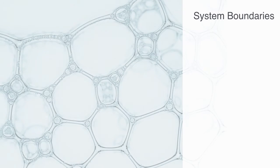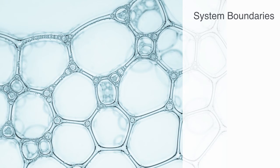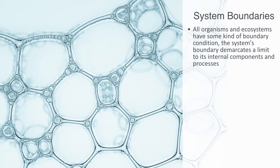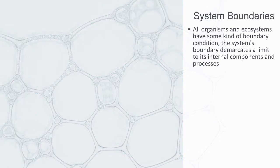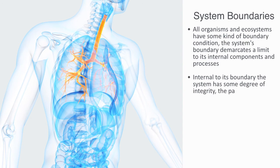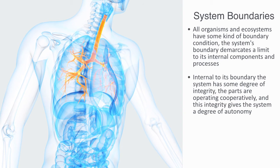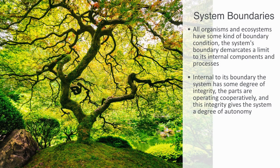These parameters within which an organism or ecosystem can function may be understood as its boundary condition. All organisms and ecosystems have some kind of boundary condition. The system's boundary demarcates a limit to its internal components and processes. On a theoretical level, a boundary can be understood as a mechanism for regulating the inputs and outputs of energy and entropy, and through this the maintenance of the system's integrity. Internal to its boundary, the system has some degree of integrity — meaning the parts are in some way operating cooperatively, working together — and this integrity gives the system a degree of autonomy. For example, if we take a tree, every part of the tree has been designed in some way to function as part of the entire system. The bark, leaves and trunk all serve some function with respect to the whole, and thus they are integrated, and through this integration they are able to function independently from other systems in their environment.